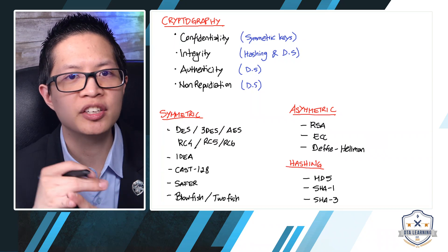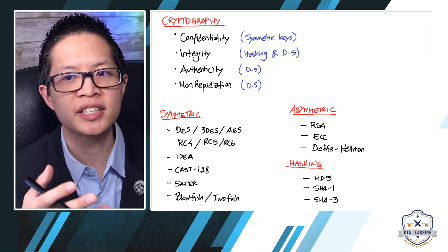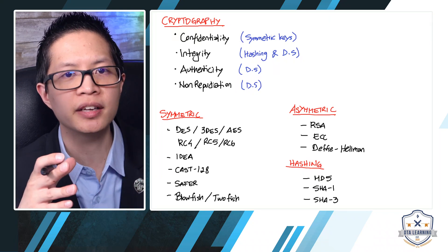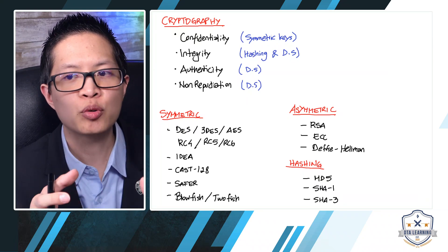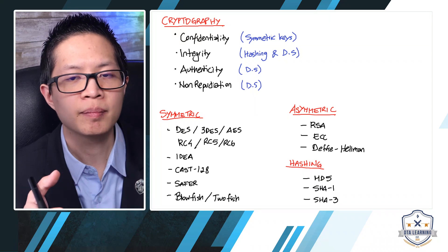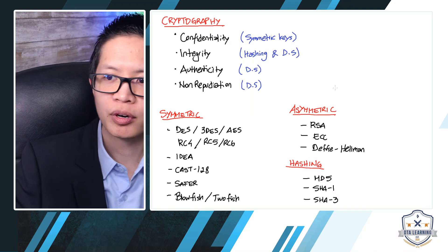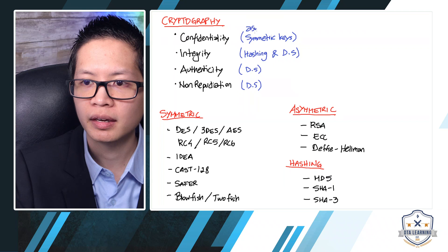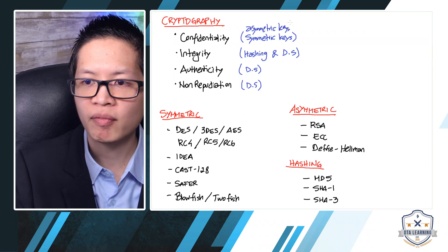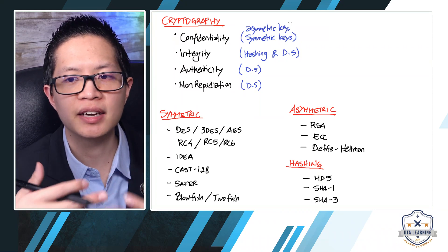Confidentiality means that only the person sending and the person receiving understand the message — no one else, even if they intercept it. That's why we use symmetric and asymmetric keys. Basically, any type of encryption will protect the confidentiality of the message because no one else can read it.